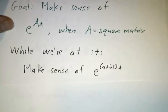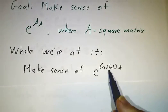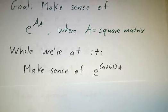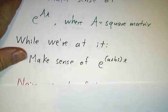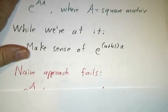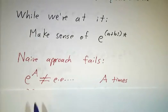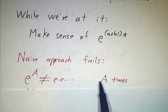And while we're at it, we're also going to make sense of e to a complex number times t. The first time I saw these concepts, I was floored. It didn't make any sense to me because I knew exponentials in a pretty naive sense as something multiplied by itself a bunch of times. If I write e to the A, that's not e times e times e, a matrix number of times. A matrix number of times doesn't make sense.